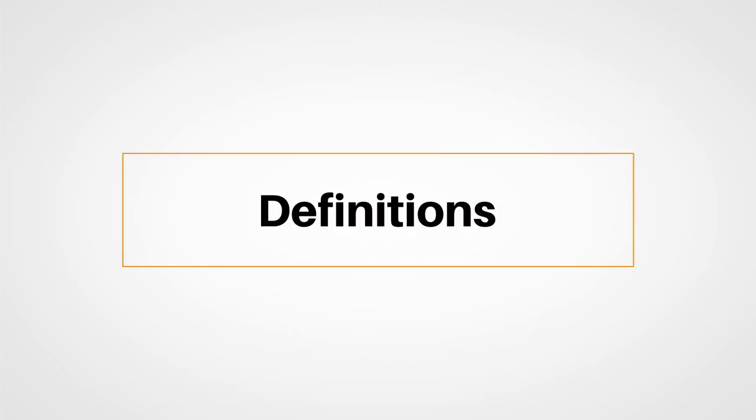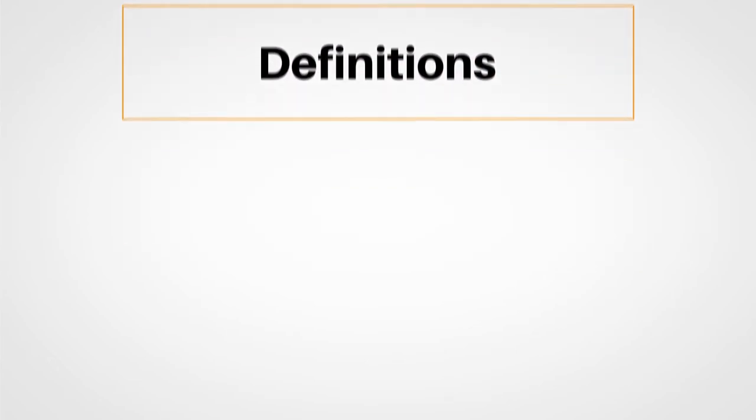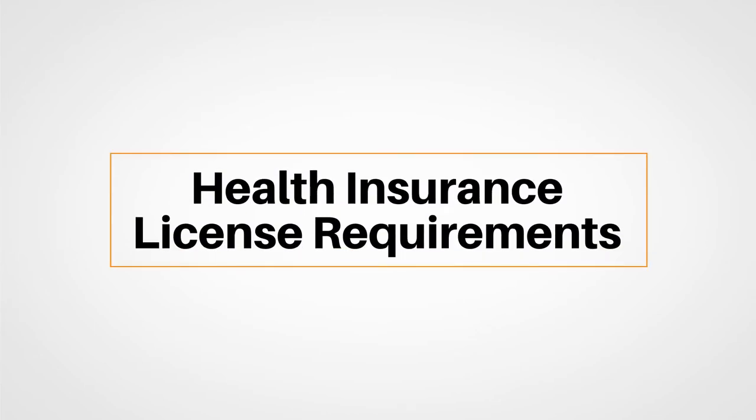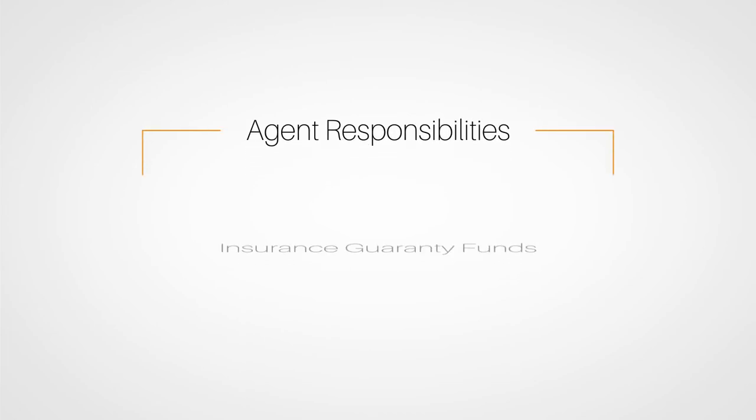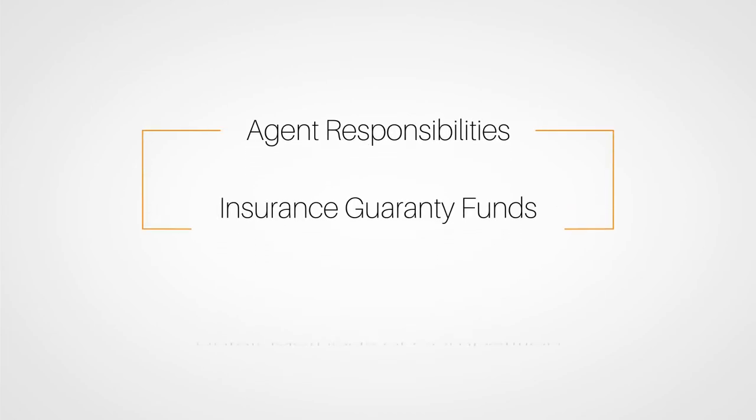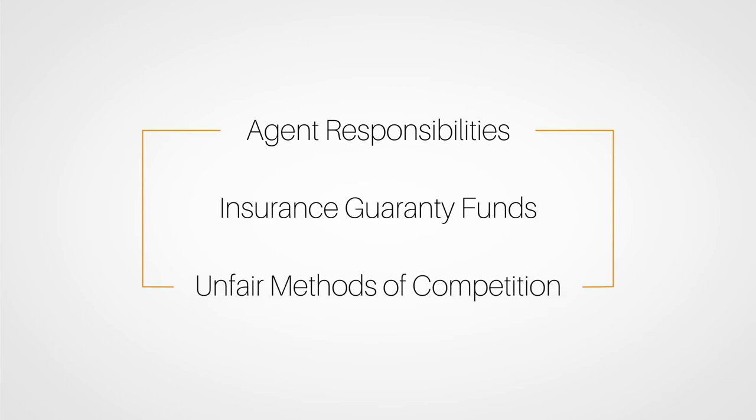After that, we'll go over important definitions you'll encounter in your career, and then move on to specific requirements you'll have to meet to get your health insurance license. Because this lesson includes those laws common to all lines of insurance, you'll see some requirements for other lines, like life insurance, in this lesson. We'll finish with agent responsibilities, insurance guarantee funds, and unfair methods of competition.